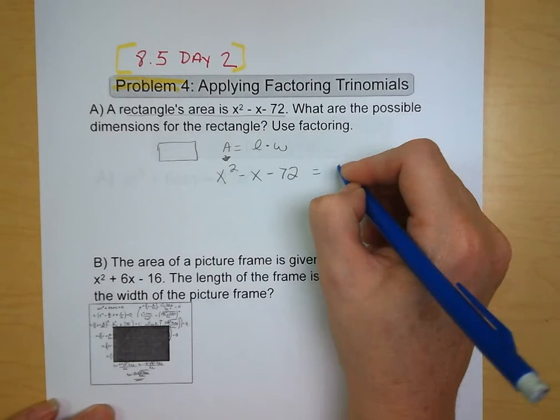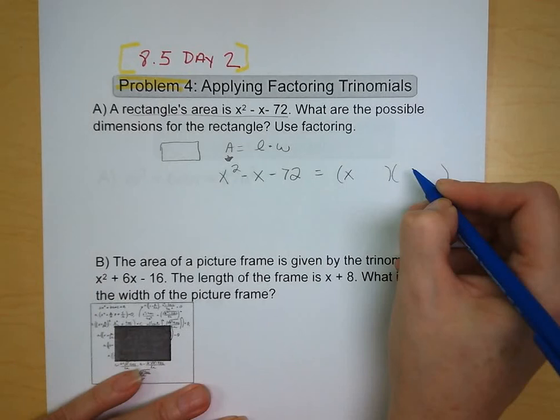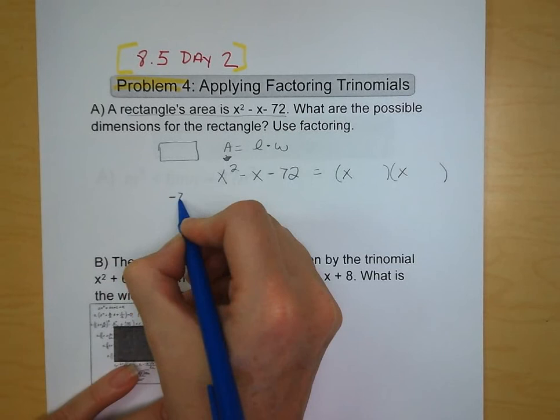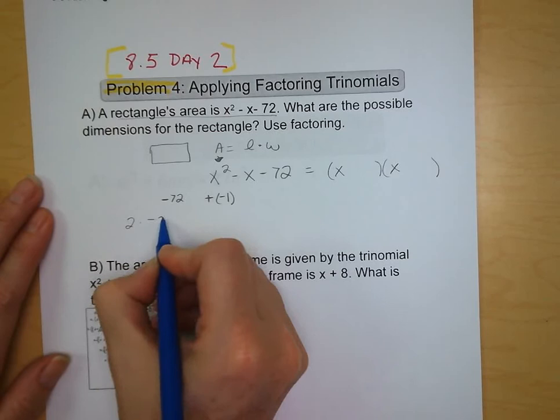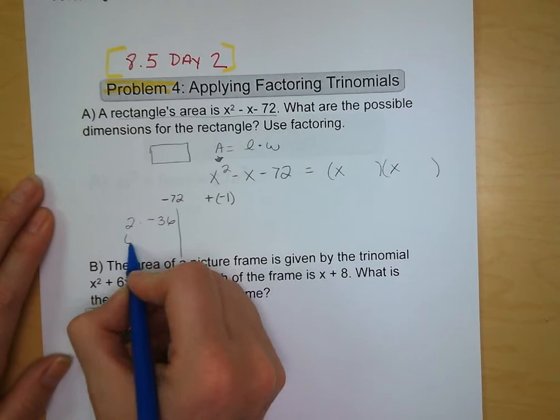We know that we need to find the products that are going to multiply to -72 and add up to -1. So products of -72: well there's 2 and -36, and that adds up to -34. That doesn't help. We've got 6 and -12, which adds up to -6. That doesn't help.